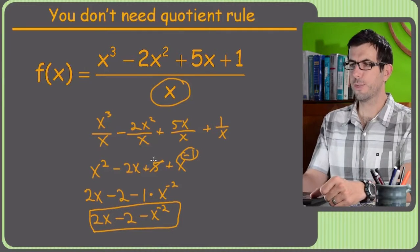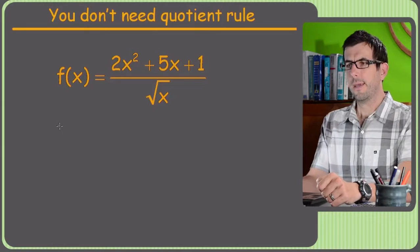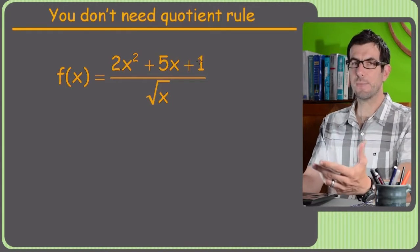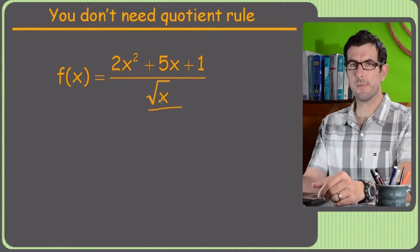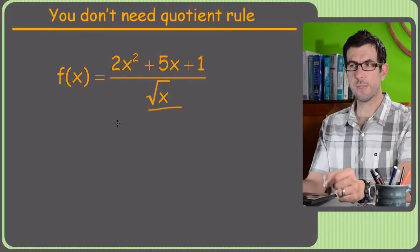Alright, that's a trick that will really come in handy. The quotient rule is just so terrible. Don't need the quotient rule again. Yeah, so this is the exact same situation. I've got sort of a single term in the denominator, which makes it pretty likely that the breaking up into separate fractions trick will work.